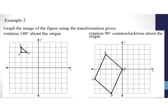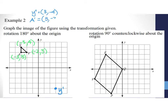Example two involves a 180-degree rotation about the origin. Remember, for 180 degrees we just switch the signs of the X and Y values. Y prime goes from (-3, 4) — wait — Y prime becomes (3, -4). A prime goes from (-3, 3) to (3, -3). V prime goes from (-2, 3) to (2, -3). Drawing the triangle connects these transformed points.